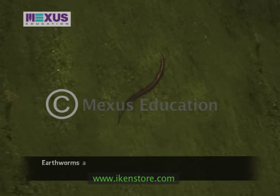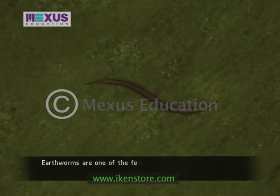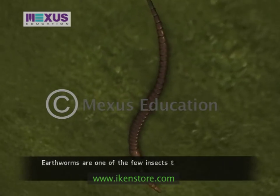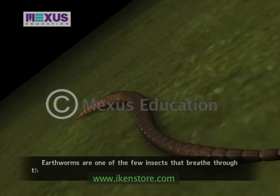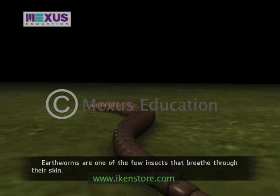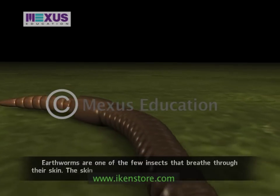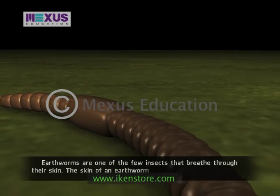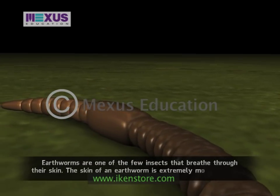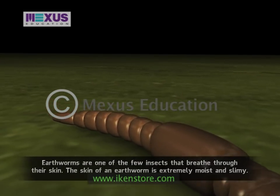Earthworms breathe through their skin. The skin of an earthworm is extremely moist and slimy, which allows for gas exchange through the skin surface.